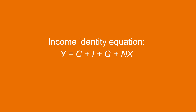So a more systematic way to derive this negative correlation between P and Y is to make use of the income identity equation: Y equals C plus I plus G plus NX. Let's see how prices influence each of the four components of output Y. Then we can add them up to find the aggregate impact of prices on output.